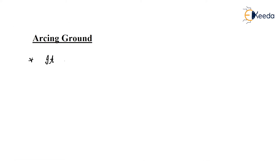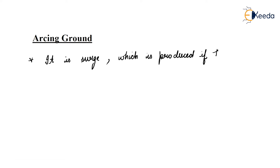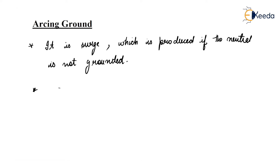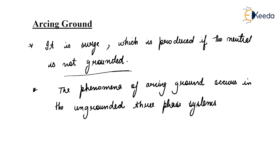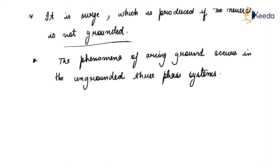So what is this arcing ground? Basically, it is the surge which is produced if the neutral is not grounded. The phenomenon of arcing ground occurs in ungrounded three-phase systems.